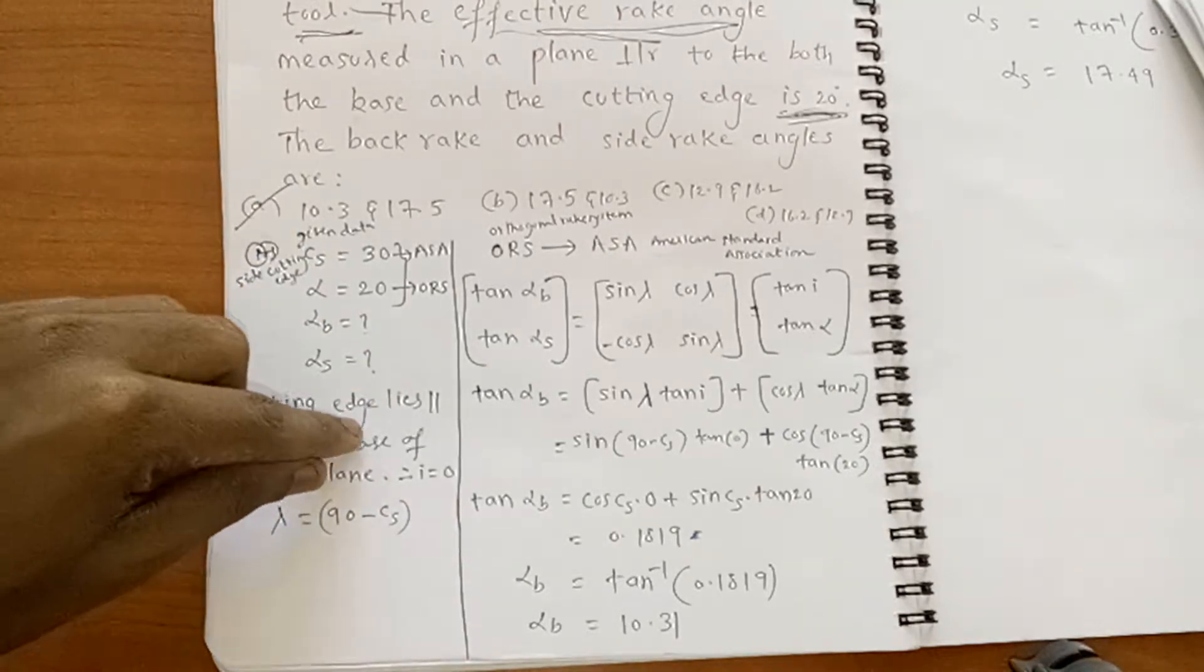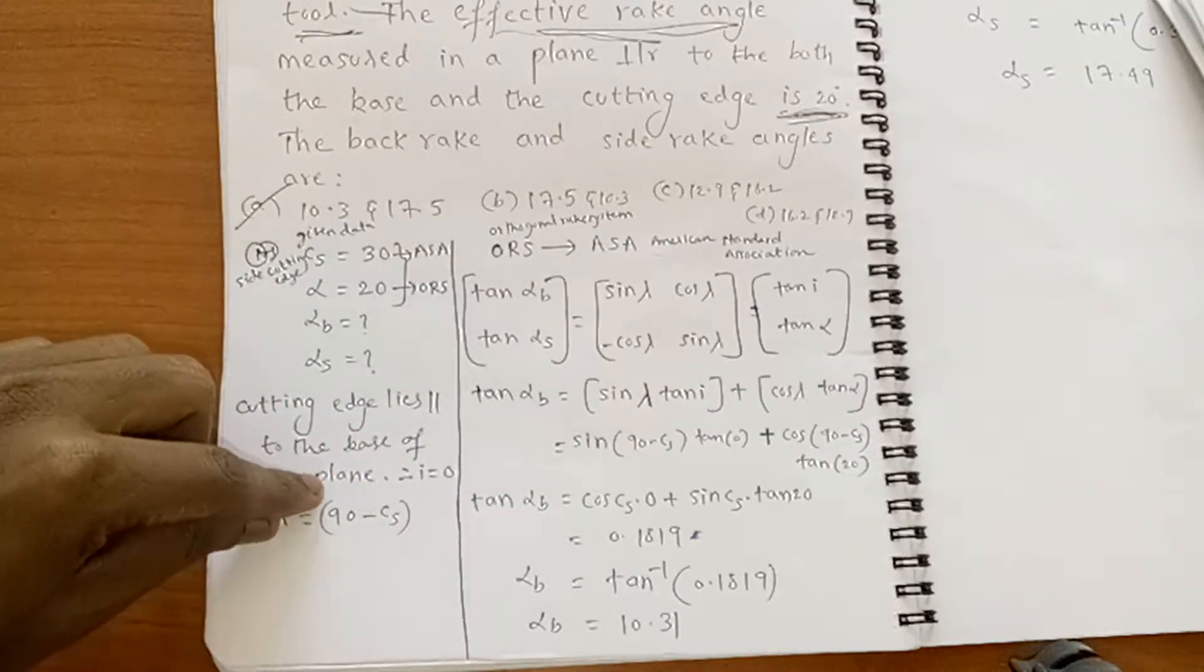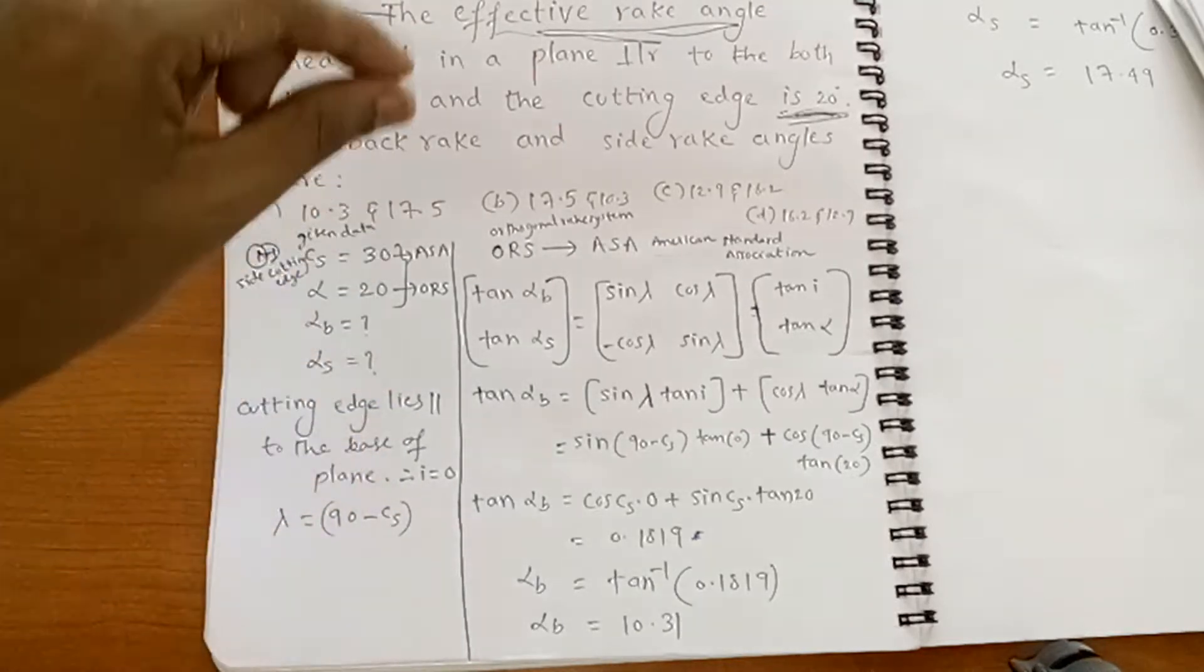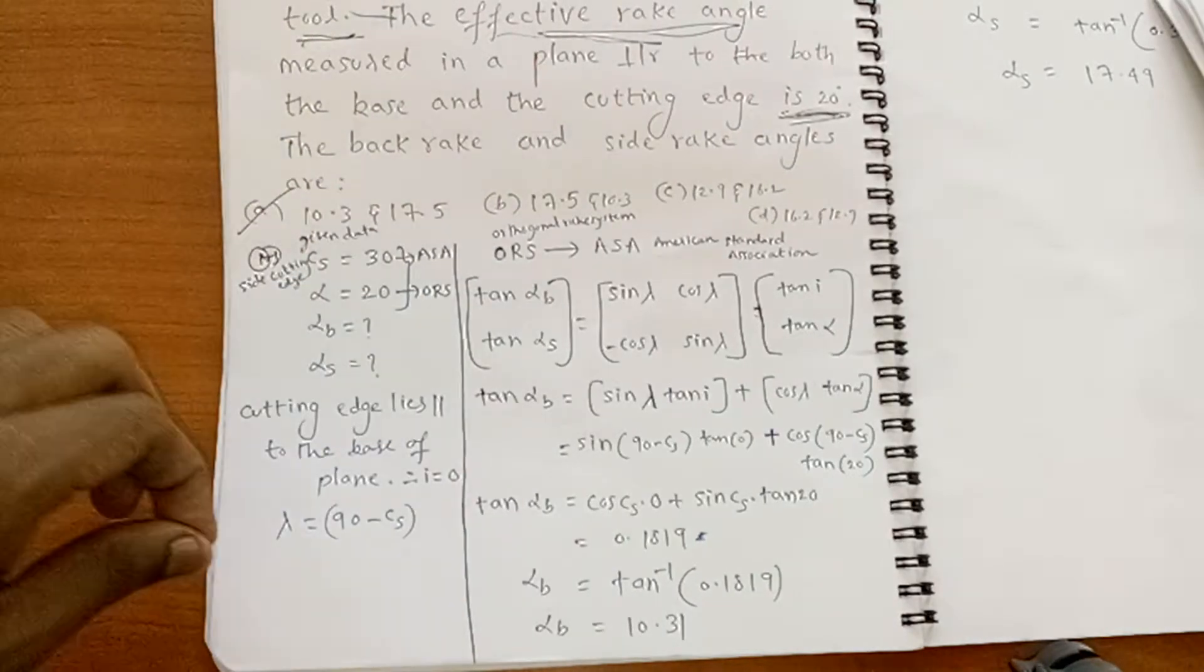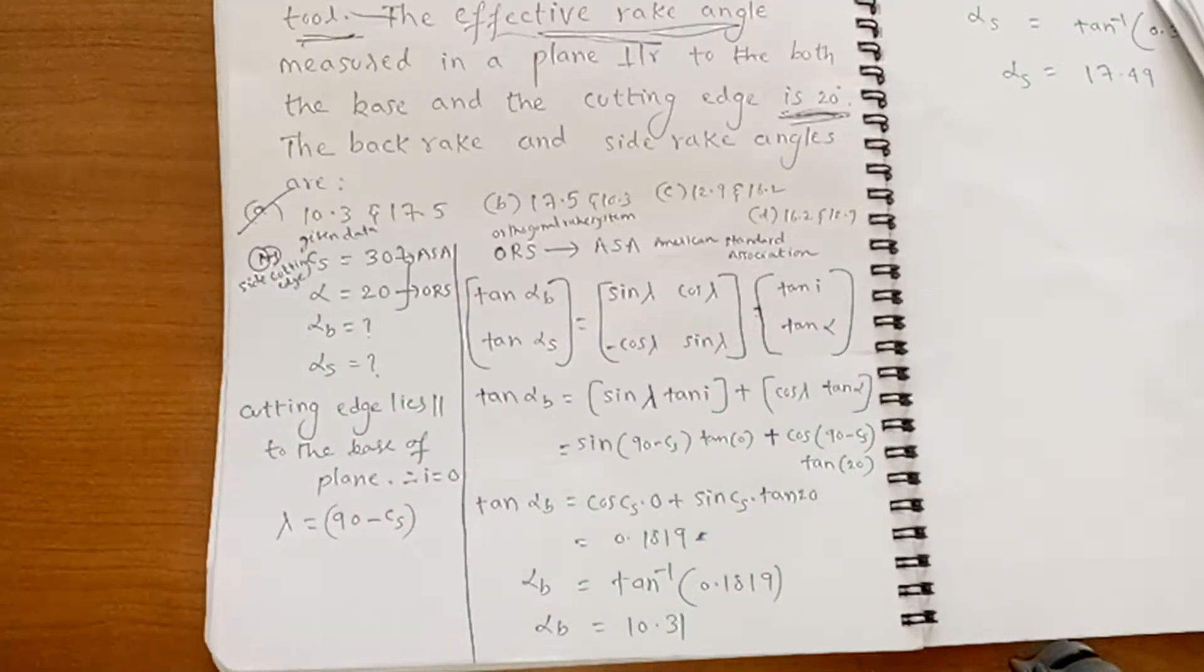One more point, cutting edge lies parallel to the base of plane. This statement is given in the question. Meaning of this statement is inclination equal to 0. Lambda means, you know, 90 minus CS.